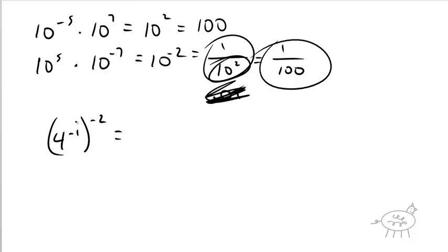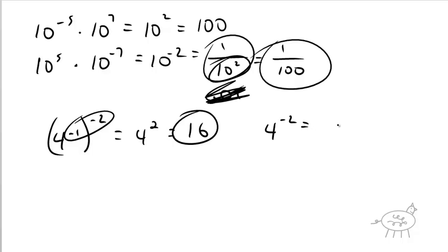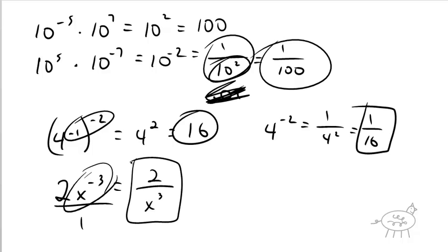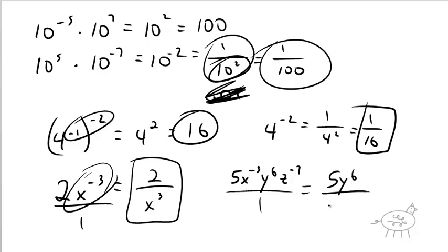Let's do a couple more examples. 4 to the negative 1 to the negative 2 power: multiply the exponents — negative 1 times negative 2 is 2, so 4 squared is 16. What about 2x to the negative 3 power? Only the x touches the exponent, so the 2 stays on top. It becomes 2 over x cubed. And for 5x to the negative 3, y to the 6th, z to the negative 7th — anything with a negative exponent goes to the other side of the fraction. So you get 5y to the 6th on top, x to the 3rd and z to the 7th on the bottom.